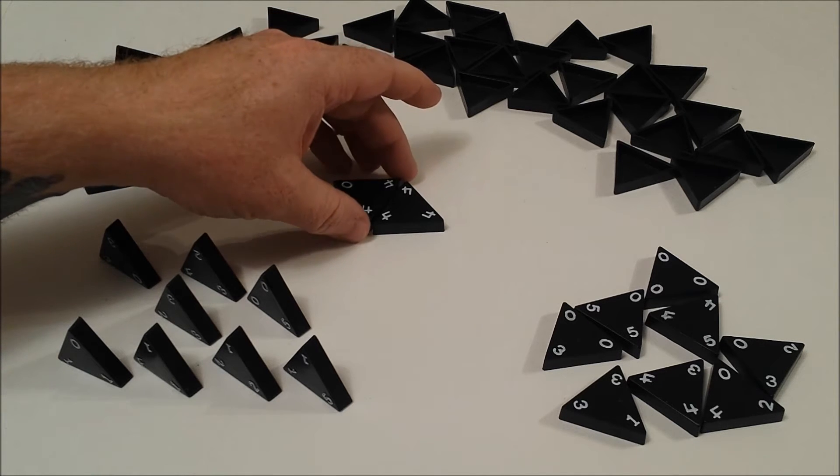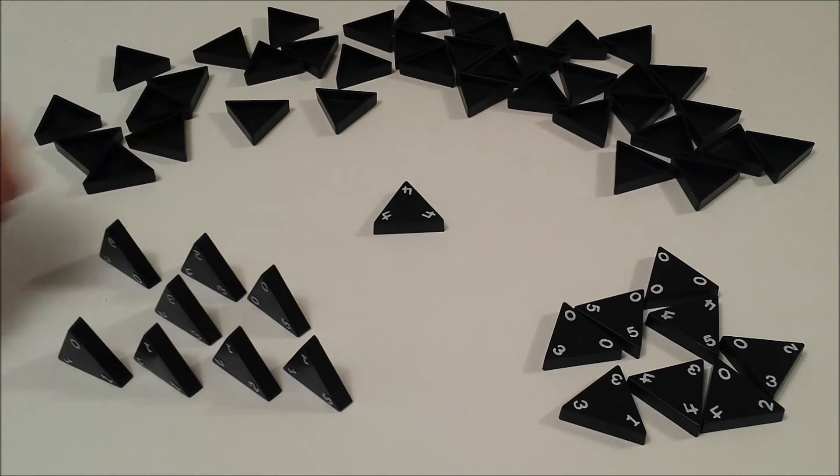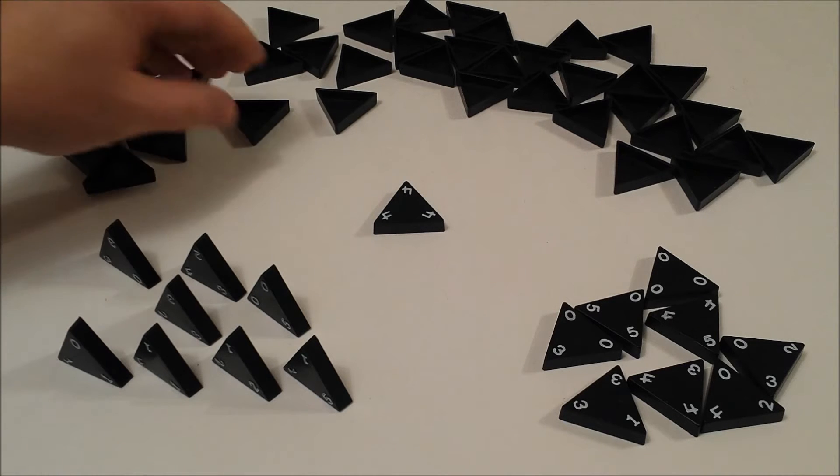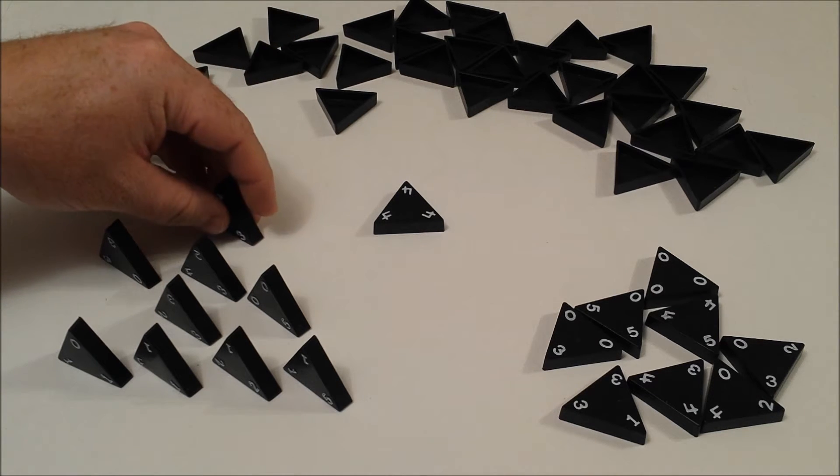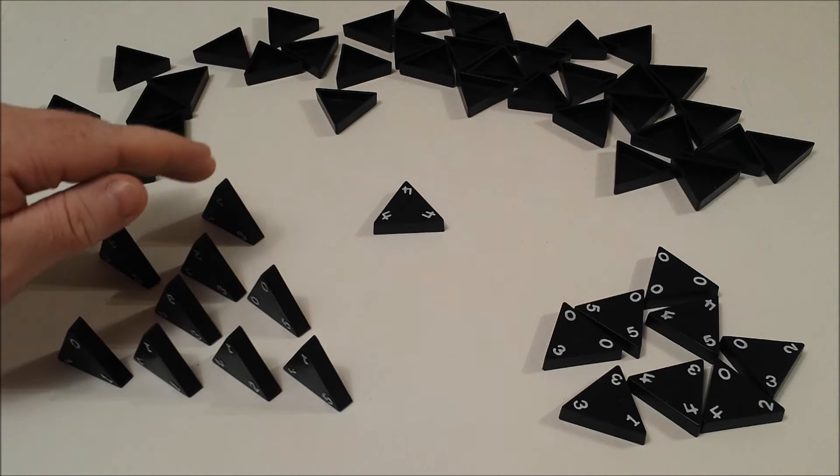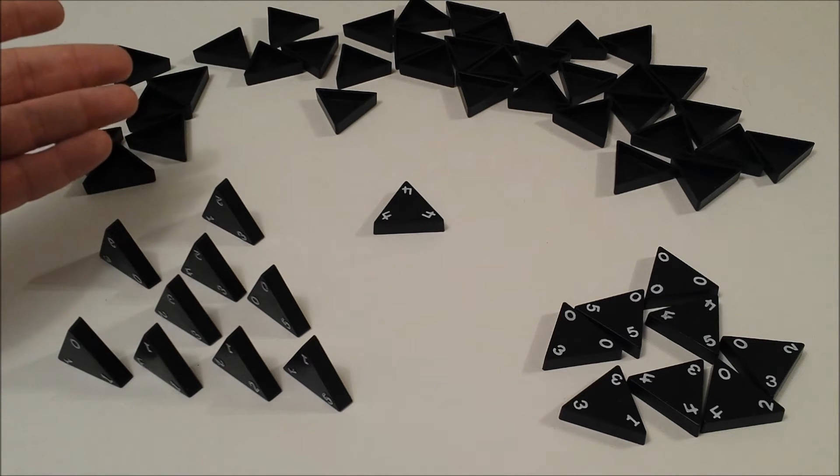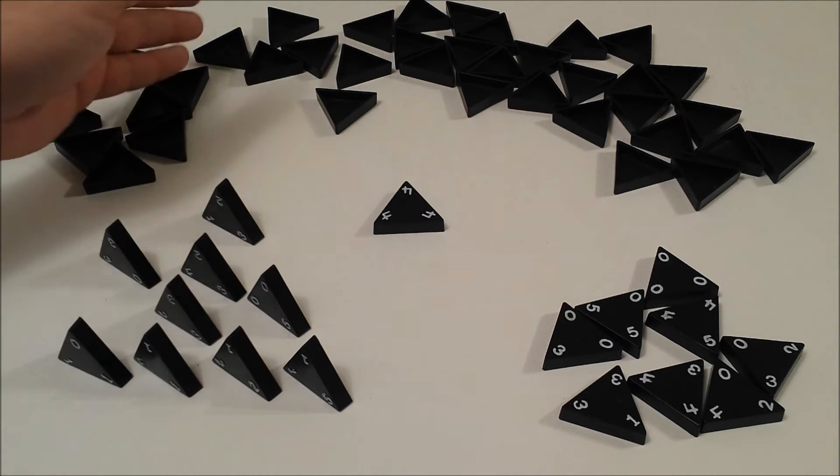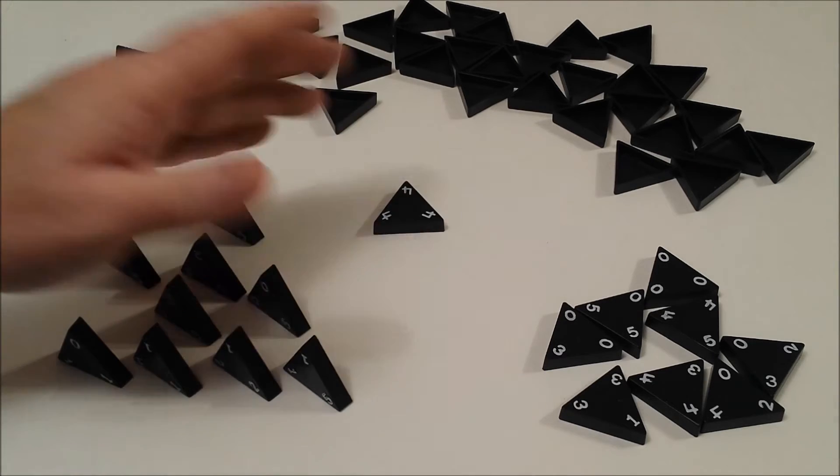But let's say this player didn't have the double four and couldn't play. They would have to draw an additional tile. Each time you draw a tile, it's minus five points, and you have to keep drawing until you can match.